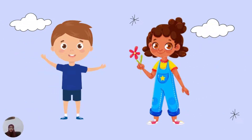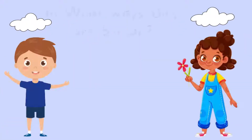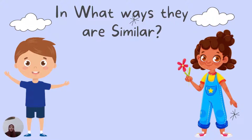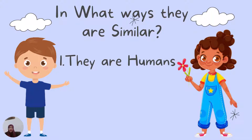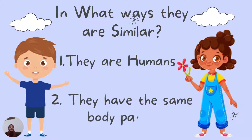Let us take this example. We have two kids here. In what ways are they similar? In what ways are they the same? Number one, they are both humans — not a plant or a cat. Number two, they have the same body parts: one head, not two heads; two hands, not eight hands — it's not a spider! So we can see some similarities: one, they are humans; two, they have the same body parts.